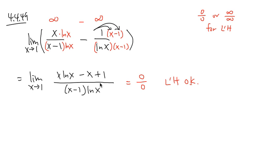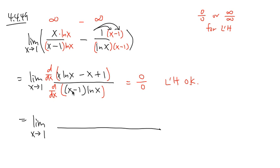So we are going to go ahead and differentiate the top and differentiate the denominator. This is still the limit when x is approaching 1. On the top, we have x times ln x, so I have to use the product rule. The derivative of x·ln x is: keep the first function times the derivative of the second (which is 1 over x), plus the second function ln x times the derivative of the first (which is 1). Then minus the derivative of negative x, which is negative 1. Derivative of the constant 1 is 0. On the bottom, we again have (x minus 1) times ln x, requiring the product rule.